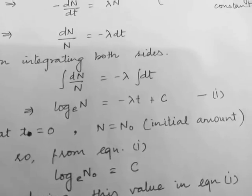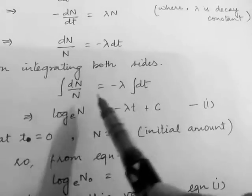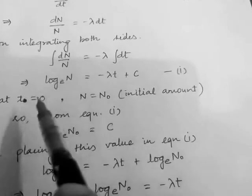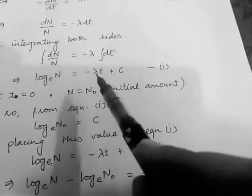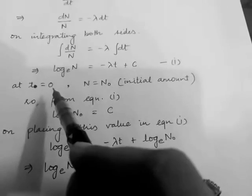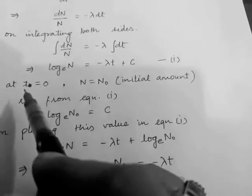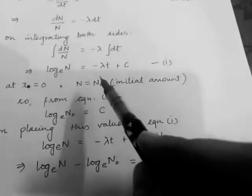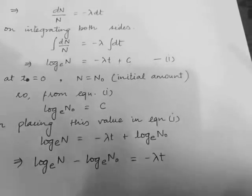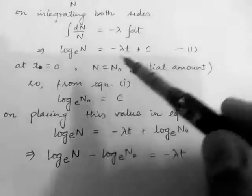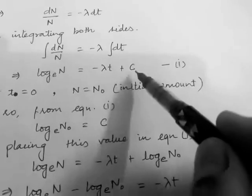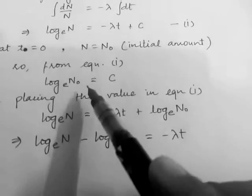Integrating both sides: the integral of dN/N equals minus λ times the integral of dt, giving ln(N) equals minus λt plus C — call this equation 1. At time t = 0, the amount of radioactive substance equals the initial amount N₀. Placing these values into equation 1, C equals ln(N₀).